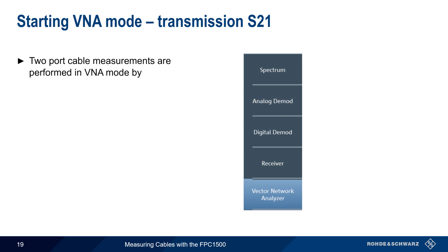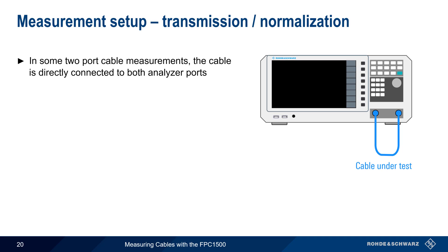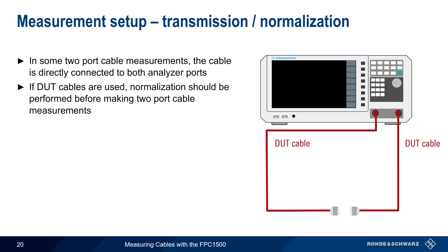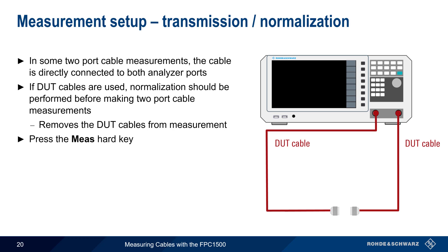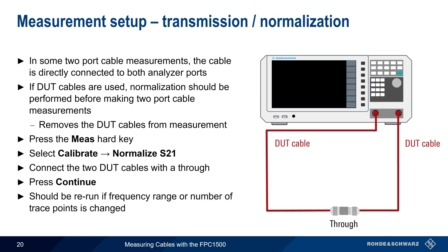To make two-port cable measurements in VNA mode, press the Measure hard key and then select Transmission S21. In some two-port cable measurements, the cable under test is simply directly connected to both analyzer ports. If DUT cables are used to connect the cable under test to the analyzer, then a normalization should be performed to remove the influence of the DUT cables on the measurement. Normalization is run by pressing the Measure hard key and selecting Calibrate, Normalize S21. After a through is used to connect the DUT cables, press Continue to run the normalization. Note that normalization should be rerun if the frequency range or number of trace points has been changed.